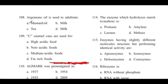Question 108: Argemone oil is used to adulterate — mustard oil, milk, or tea? Answer is A, mustard oil. Argemone oil is obtained from the plant Argemone mexicana.